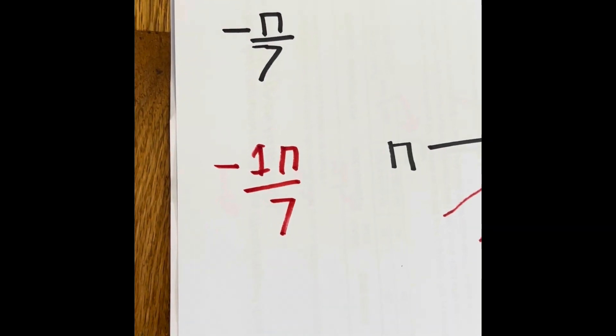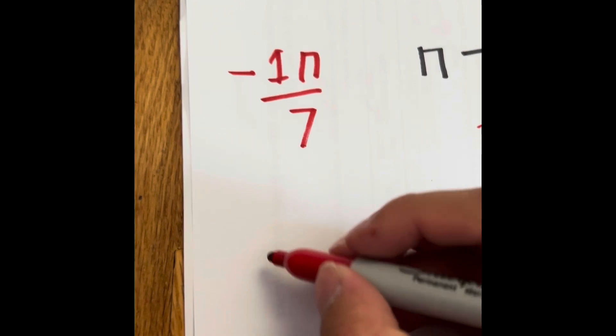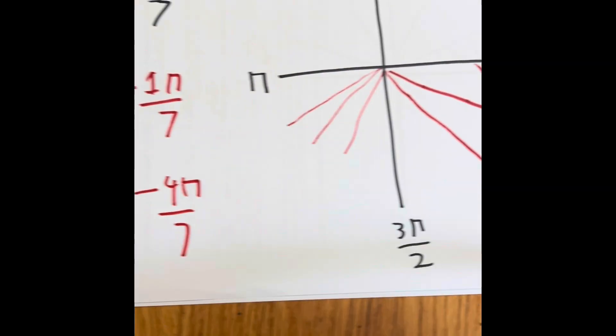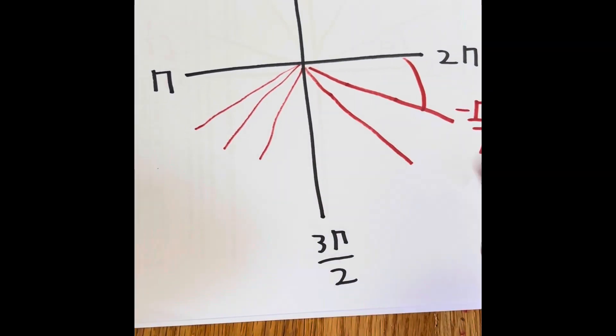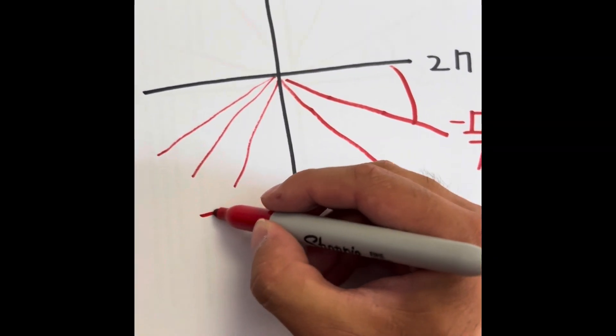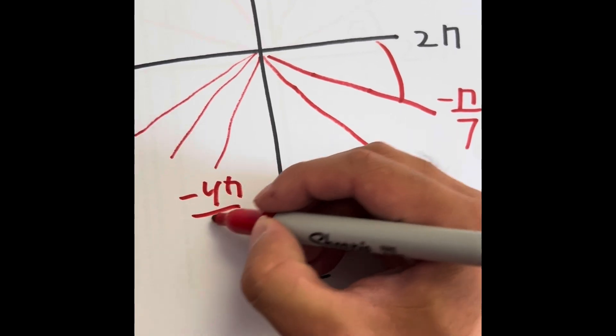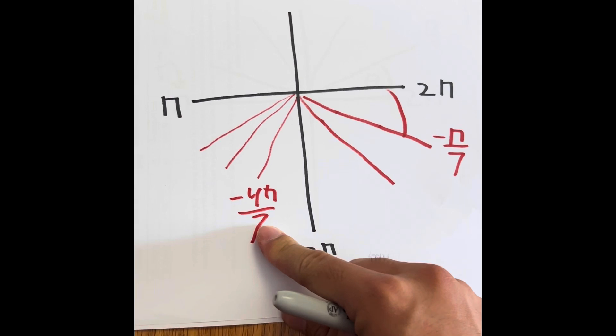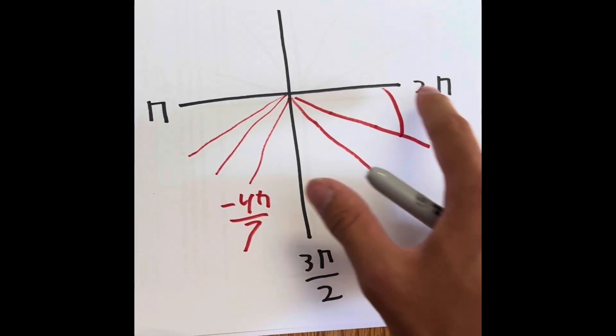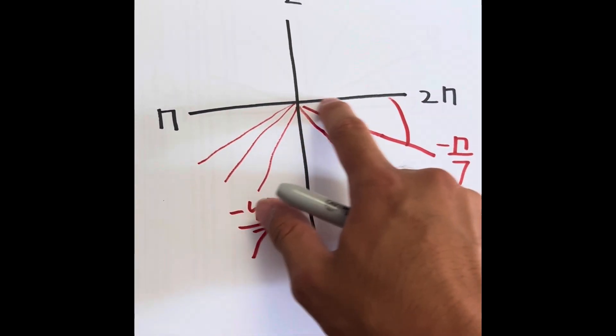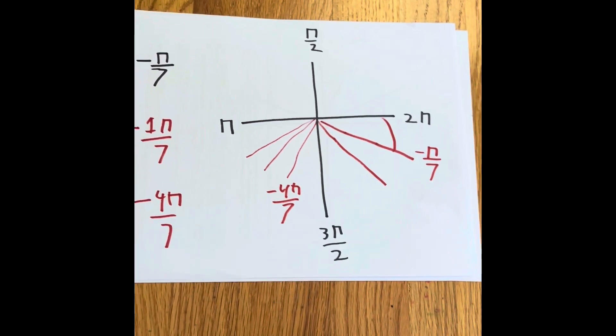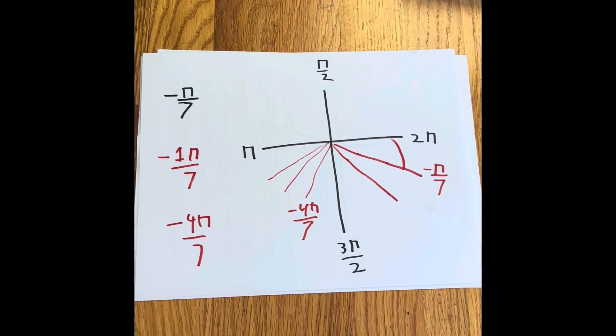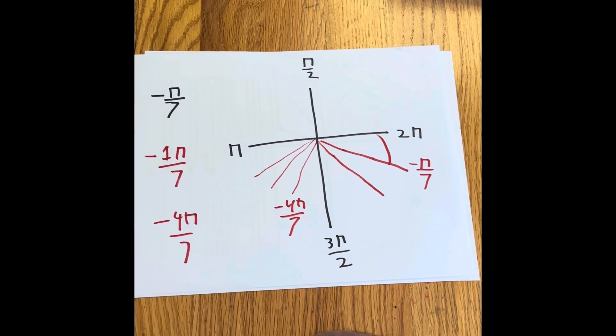If it was like negative 4π divided by 7, then we would say 1, 2, 3, 4. Then this right here would be negative 4π divided by 7. So if there was another number other than 1 in front of the π, then it's not going to be touching the standard line right here. So yeah, it basically is like playing around with fractions. It's kind of the same idea, the same logic.